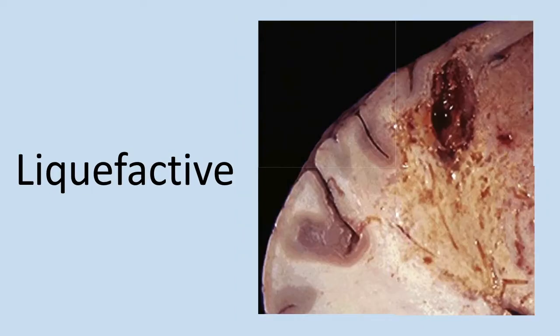Secondly, we have liquefactive necrosis. In contrast to coagulative necrosis, dead cells are actually digested and the tissue becomes a liquid viscous mass. This is typically seen in bacterial or fungal infections, where the microbes themselves may have enzymes that break down tissue and attract white blood cells, which release enzymes that damage the surrounding tissue. The necrotic material has a creamy yellow appearance — mostly dead leukocytes — referred to as pus. This type is also very indicative of hypoxic death in the central nervous system or brain, again with a soft creamy yellow appearance.